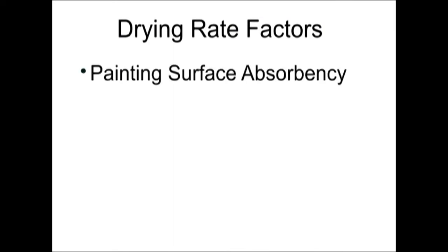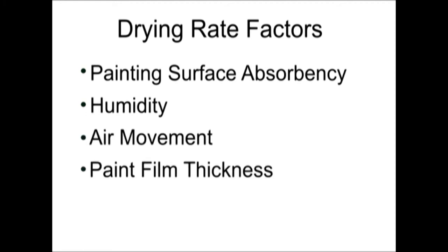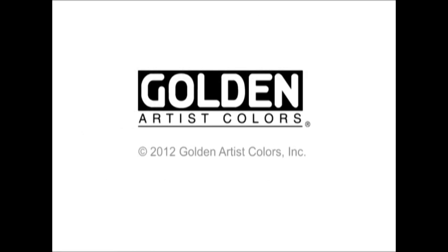To summarize, when your paint is drying too quickly or too slowly, look towards these factors as the best way to control the drying rate: painting surface absorbency, humidity, air movement, paint film thickness, and temperature. For more information, please visit GoldenPaints.com.